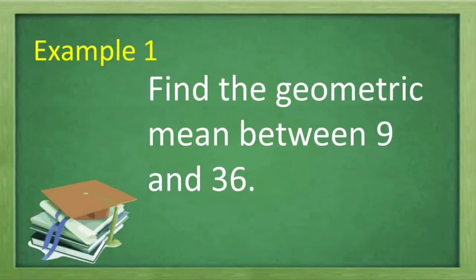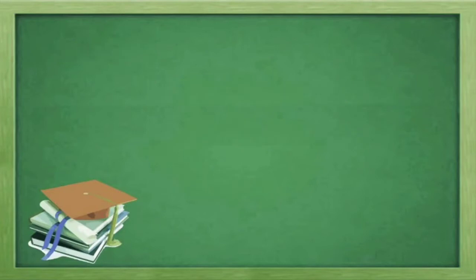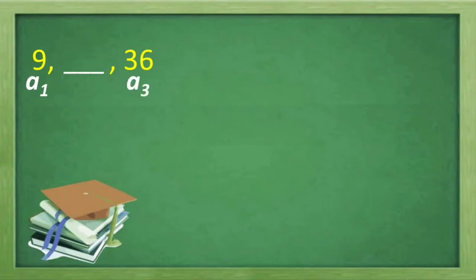Let us have an example. Find the geometric mean between 9 and 36. Given the two numbers 9 and 36, we are going to find the geometric mean between them. 9 is our first term, or a sub 1, and 36 is our a sub 3. Therefore, we're going to look for a sub 2, which is the geometric mean between 9 and 36.